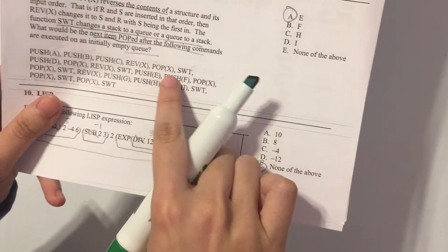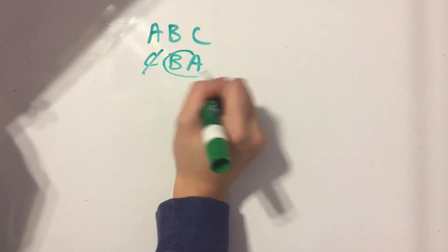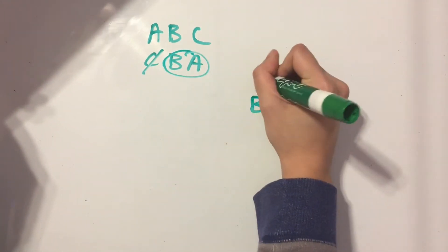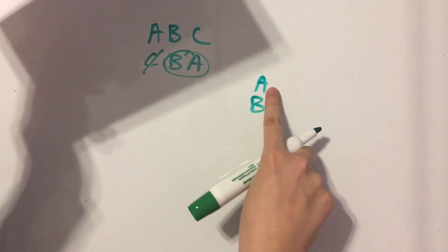Now after popping it, we switch. So we go from a queue to a stack. So B is on the bottom, and then A is on top.